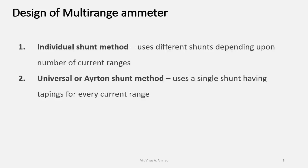There are two methods to design multi-range ammeter. First method is the individual shunt method. This uses different shunts depending upon the number of current ranges. And the second method, the universal or Ayrton shunt method. It uses a single shunt having tappings for every current range.